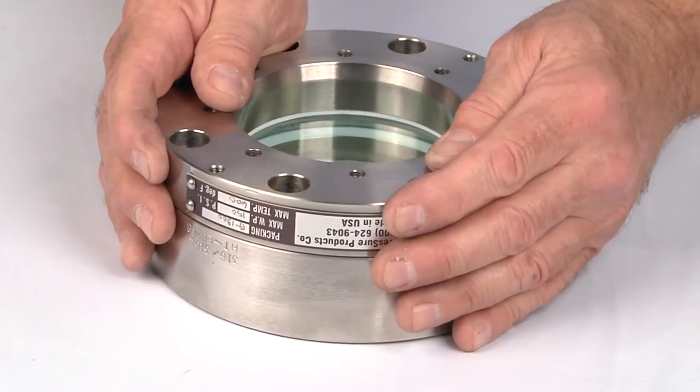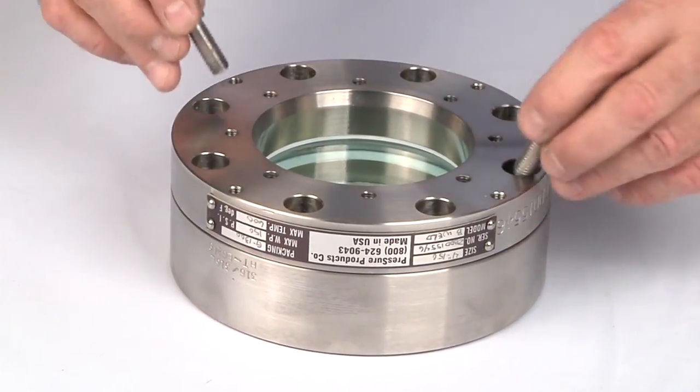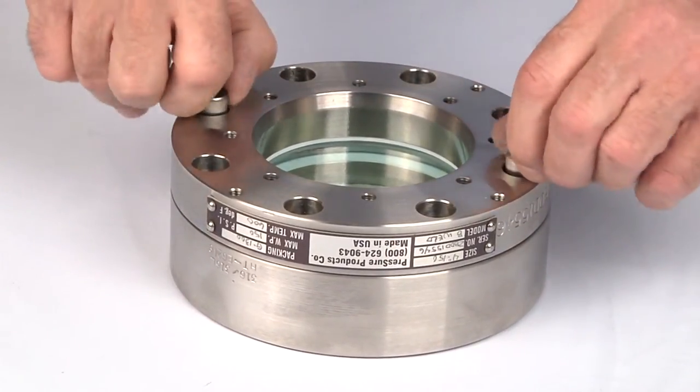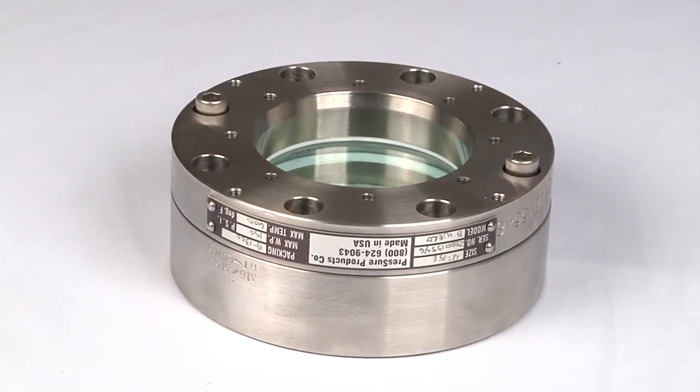Place the retainer cap into position and install the cap screws. Due to the non-compression of the packing, the cap may ride on the compression ring.